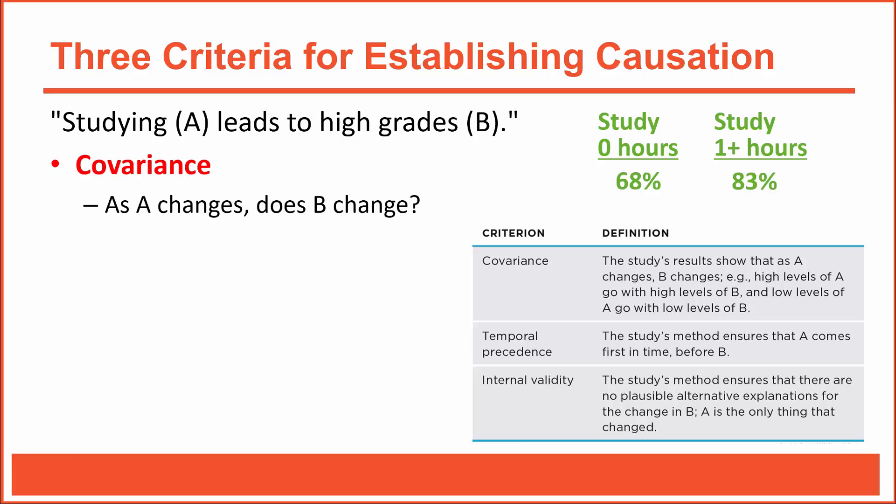The first criterion is covariation, which simply assesses if the two variables are related. We can ask: as the amount of studying changes, do grades change? The answer is yes — there is clearly at least some variation between the grades of those who studied and those who did not. This study meets the requirement of covariation.